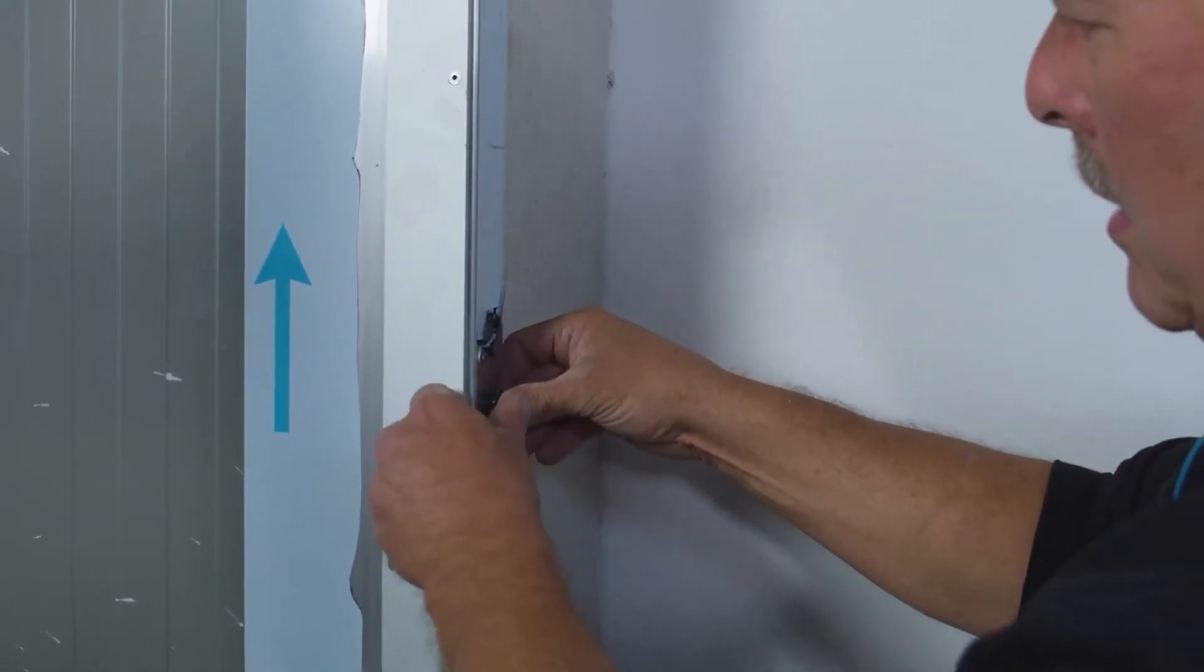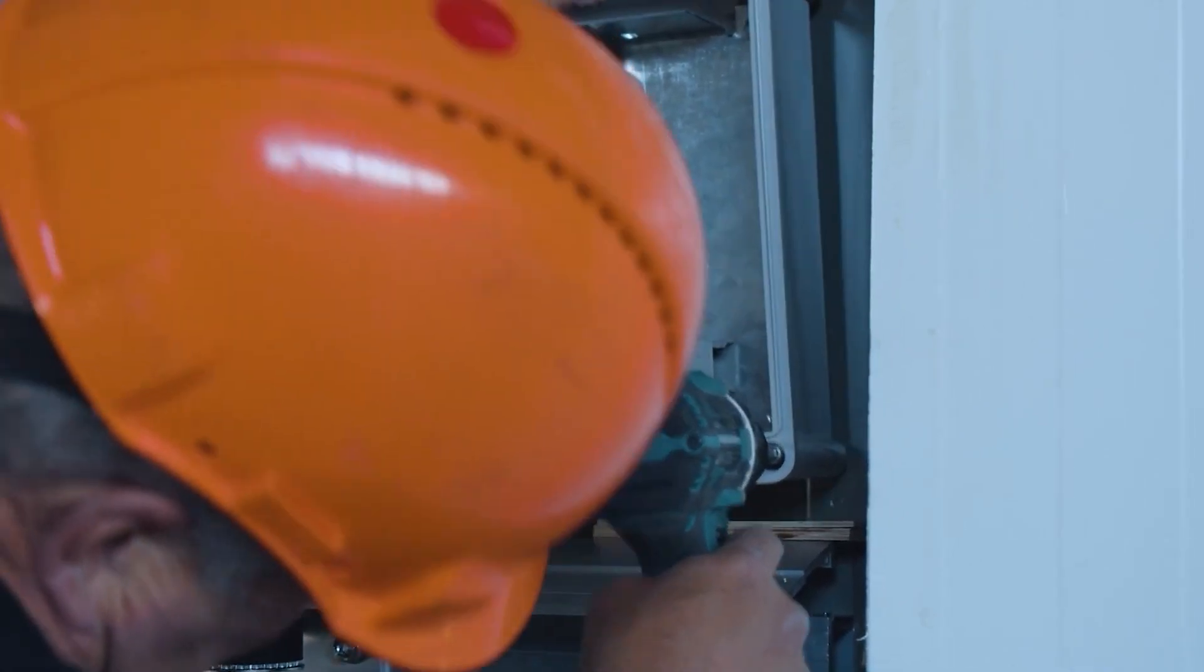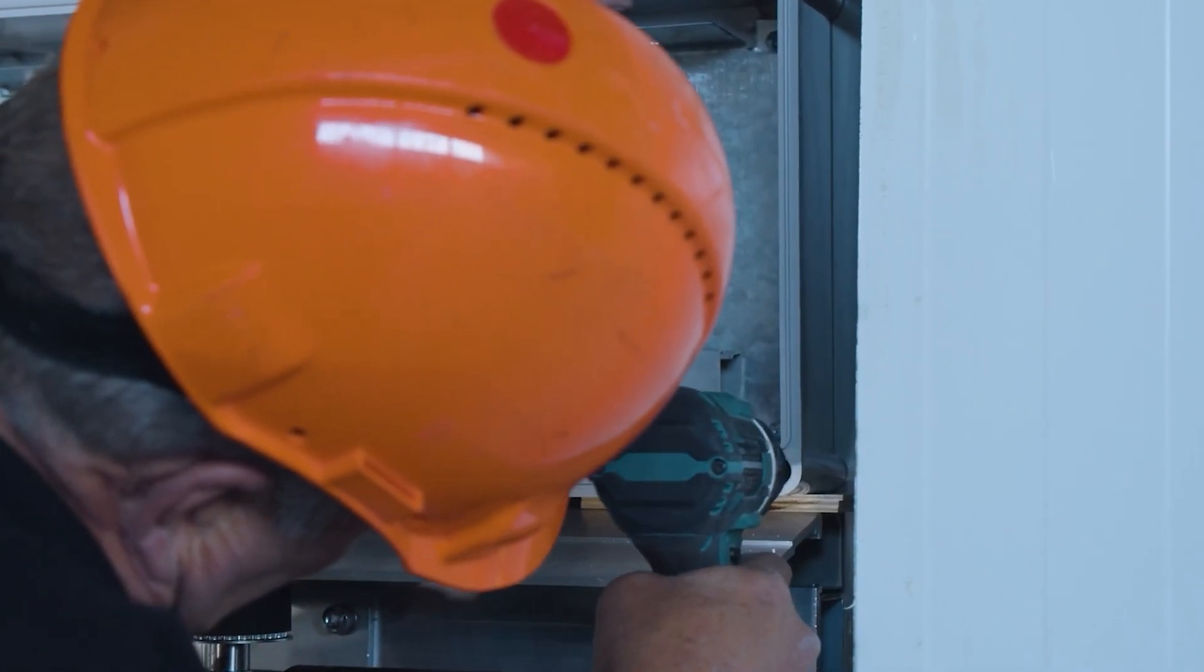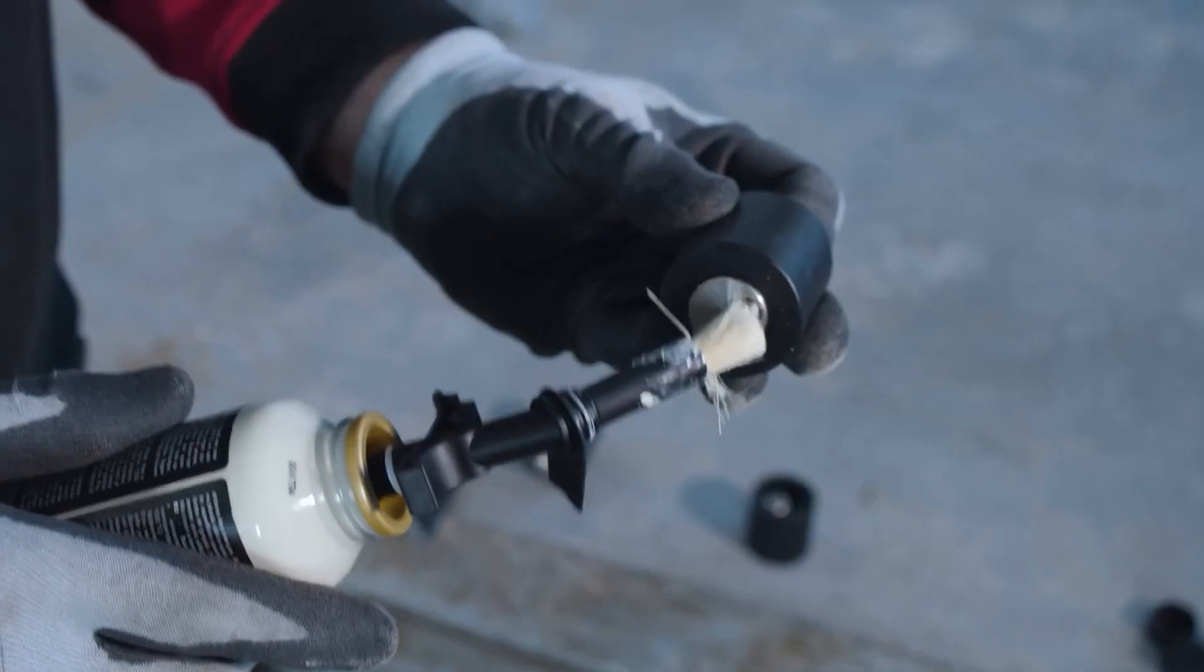Position, secure, and connect the sensors using the document supplied. Mount the controller to the wall. Apply grease on the guiding cams.